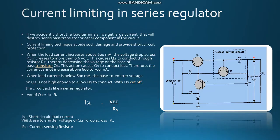To avoid power dissipation in the series pass transistor, an external current limiting technique is used. Now we see current limiting in the series regulator. If we accidentally short the load terminals, a large current flows that will destroy the series pass transistor or other components such as the zener diode. The current limiting technique avoids such damage and provides short circuit protection. The current limiting technique uses transistor Q2 and resistor R4, where R4 has a very small value of approximately 1 ohm.